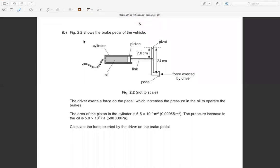Figure 2.2 shows the brake pedal of a vehicle. The driver exerts a force on the pedal which increases the pressure in the oil to operate the brakes. The area of the piston cylinder is 6.5 × 10^-4 meter squared.